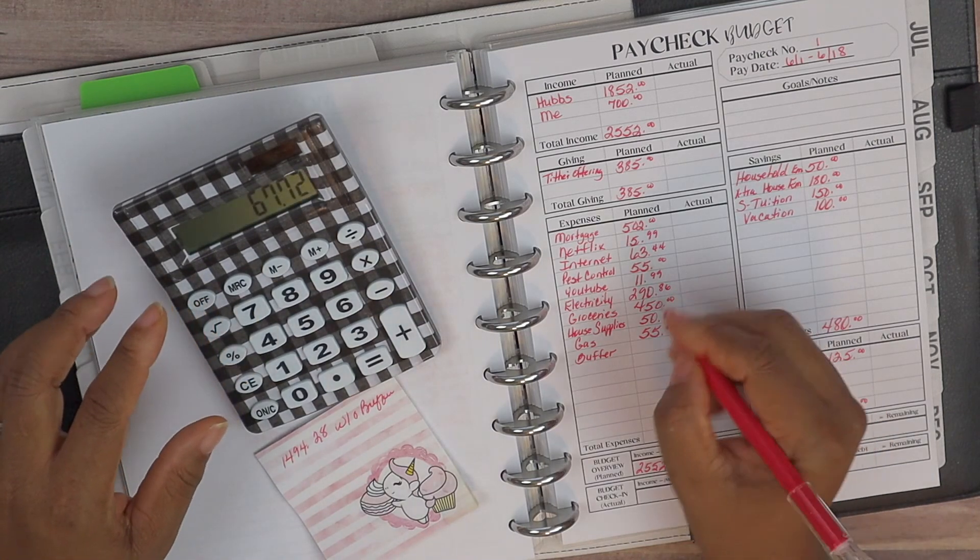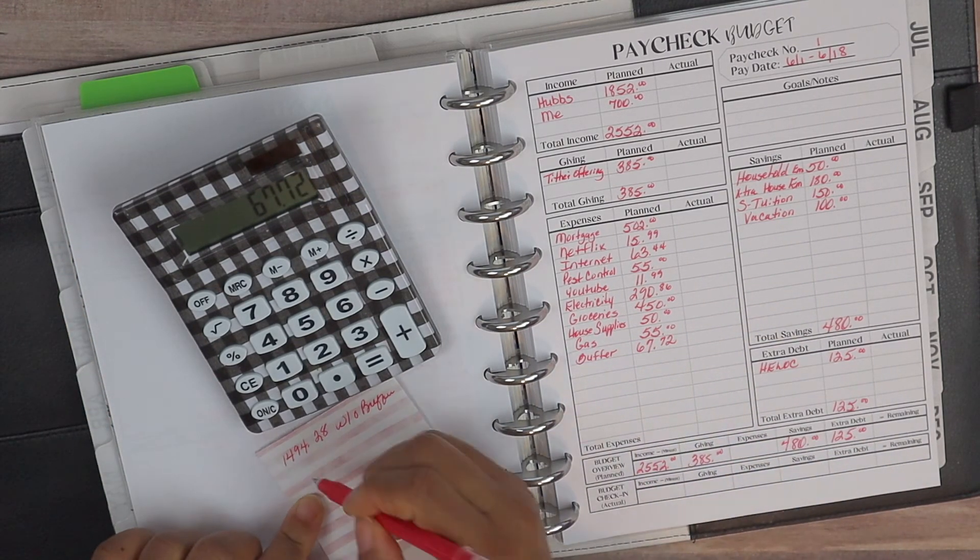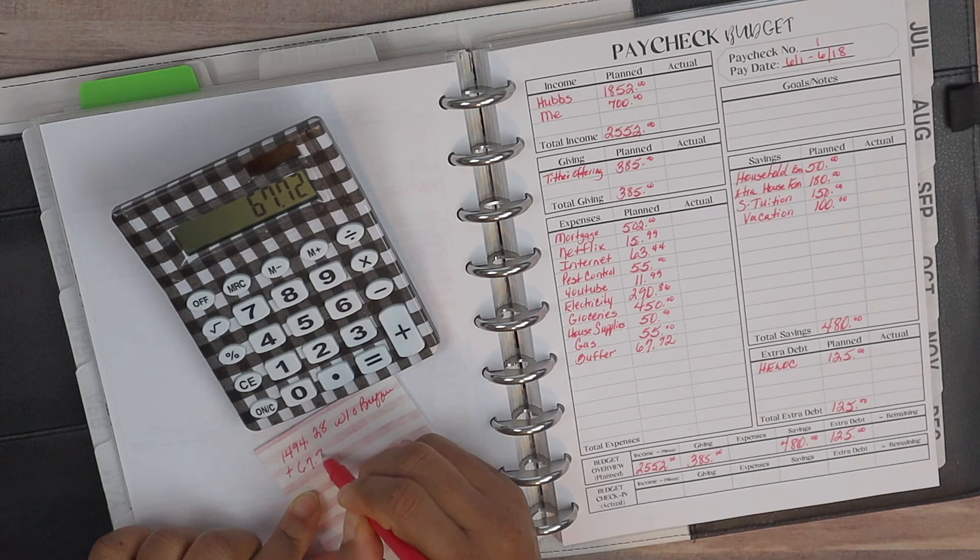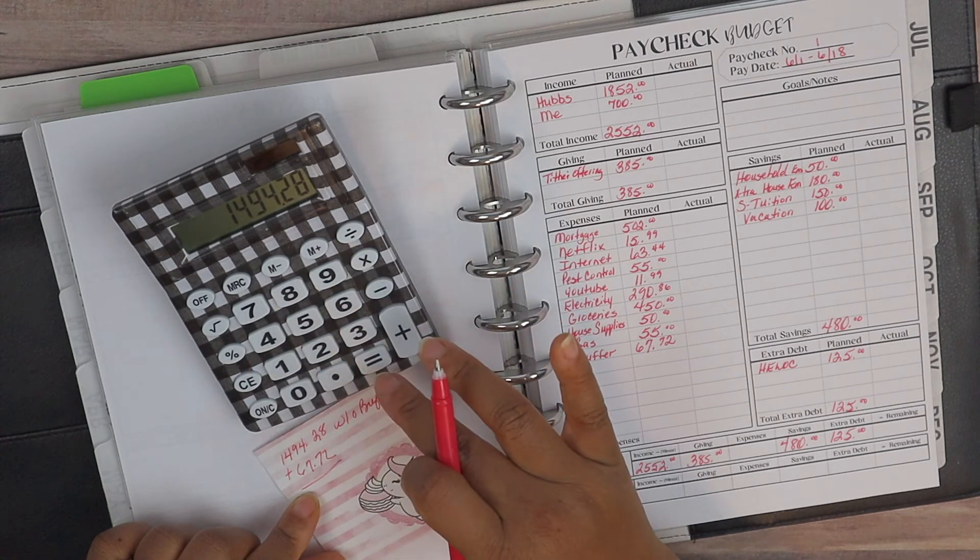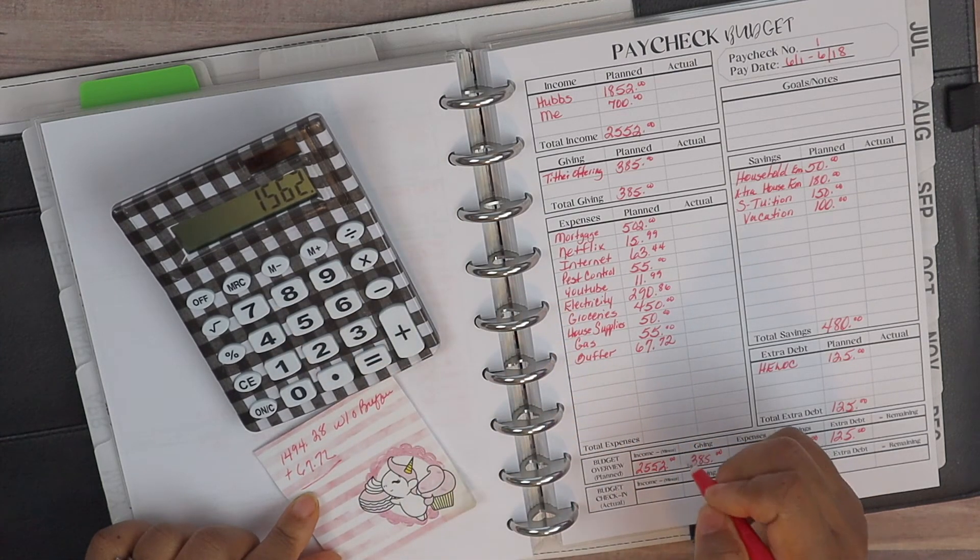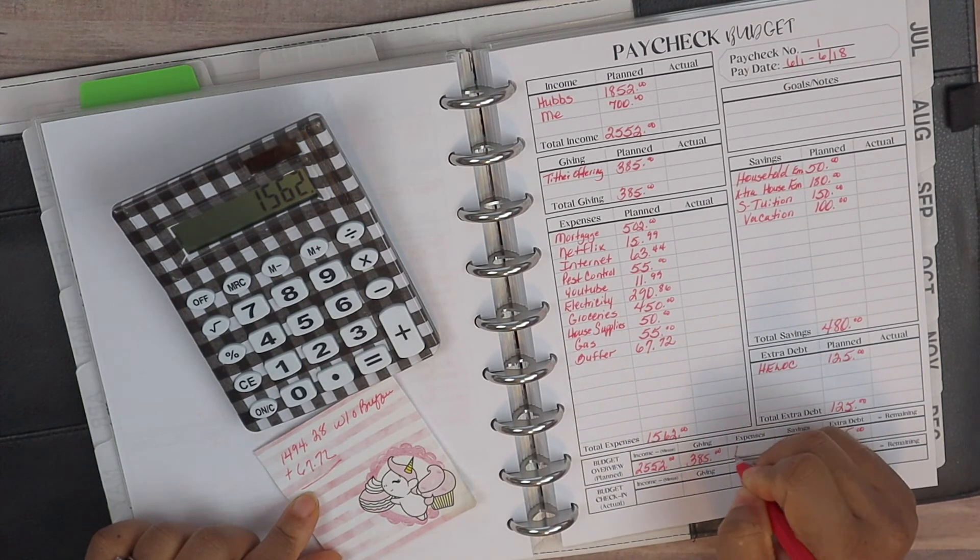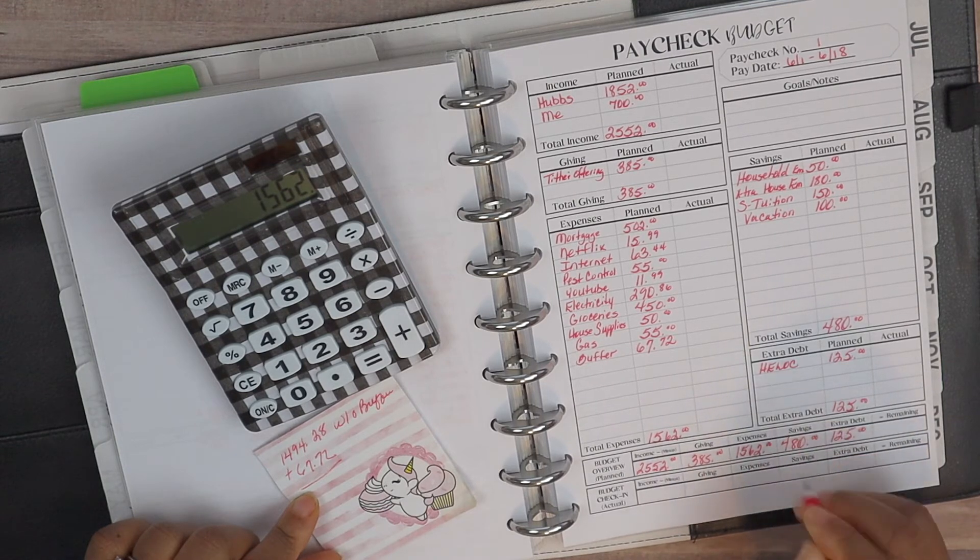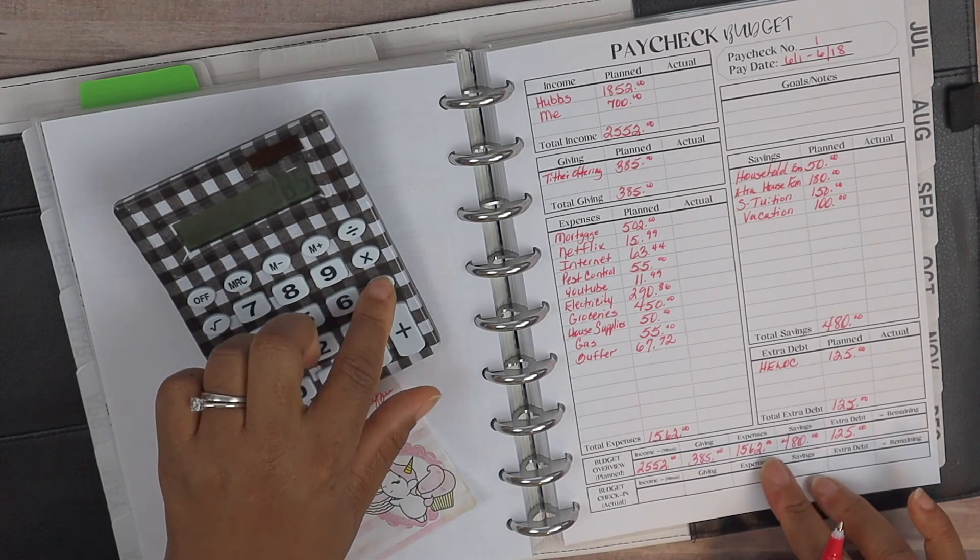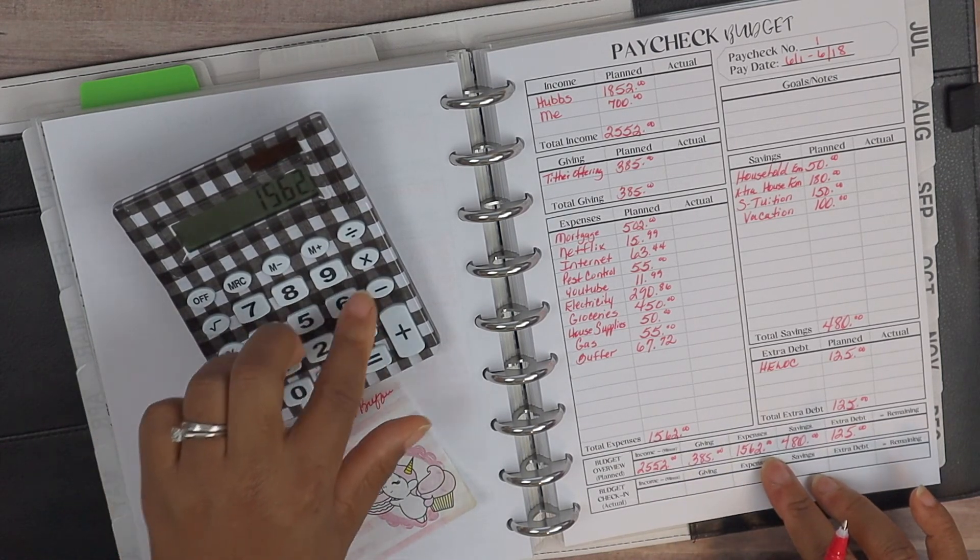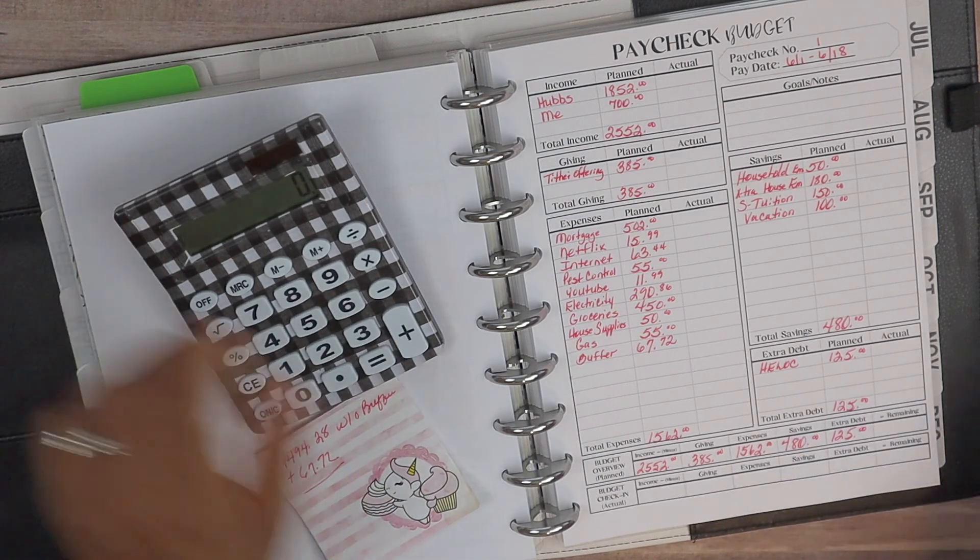So we can just put that in as the buffer. And then we will have a total of expenditures, $67.72 plus $1,494.28. So our expenditures come to $1,562 and then we can put this here. And we should get a zero-based budget. So $2,552 minus $385 minus $1,562 minus $480 and then minus $125. That's a zero-based budget.